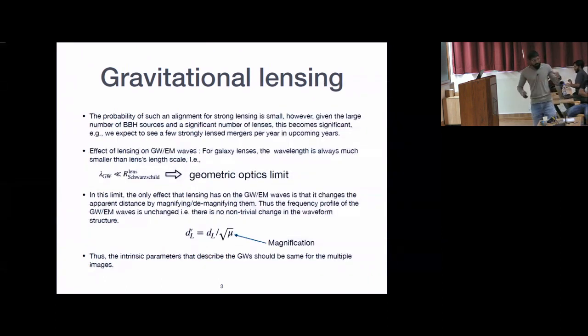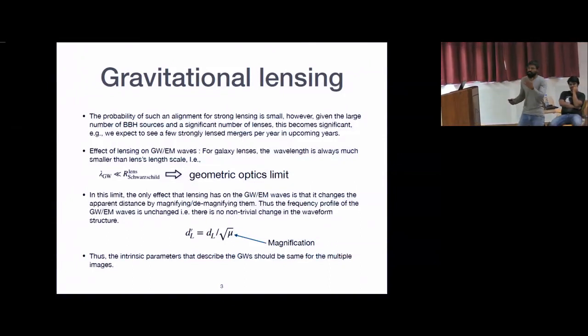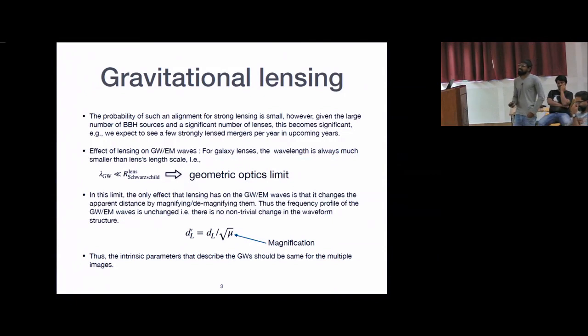But you see in space there is a lot of space. Things can be anywhere. But the thing that saves us is there are a larger number of sources and corresponding larger number of lenses. So when you do statistically, it turns out that there is significant probability for a source to get lensed before it reaches the observer, in a statistical sense, just because you have larger number of sources and lenses. For example, we expect to see a few strongly lensed mergers, 2-3 strongly lensed mergers in upcoming years when our detector sensitivity goes higher and higher.